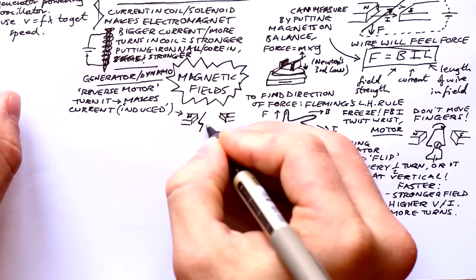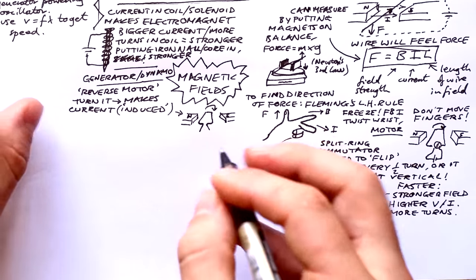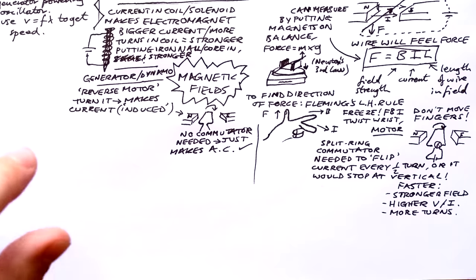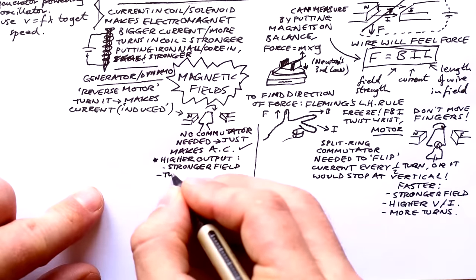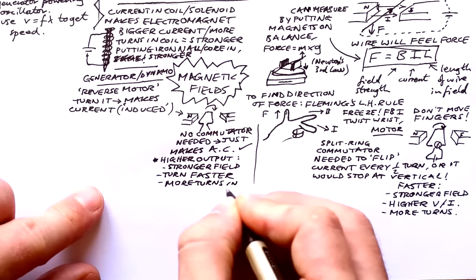A generator or a dynamo is almost like the opposite of a motor. We turn it and it makes current. We can say that a current is induced. Here's our magnets again, and here's a coil. We don't need a commutator this time though. It just means we get AC out, but that's okay. To make the dynamo have a higher output, we can have a stronger field or more turns in the coil, and naturally we can just turn it faster as well.